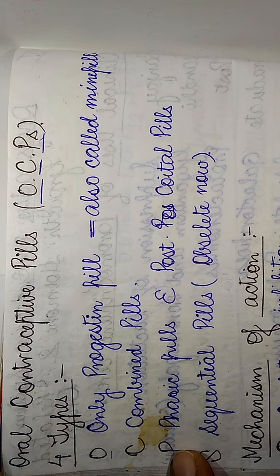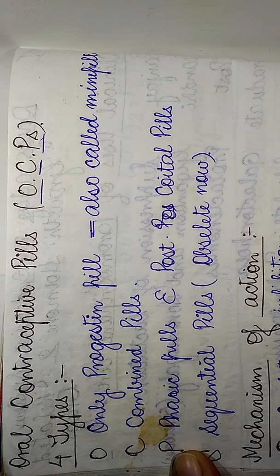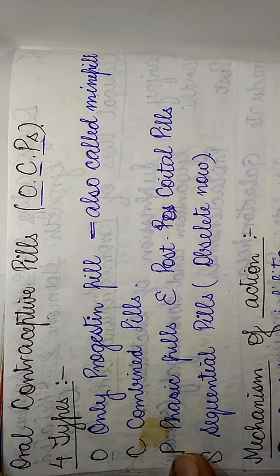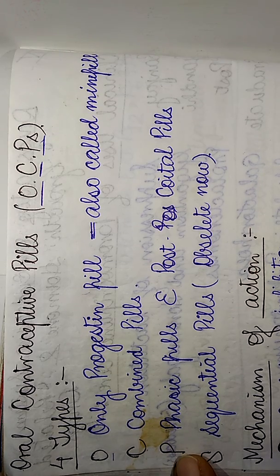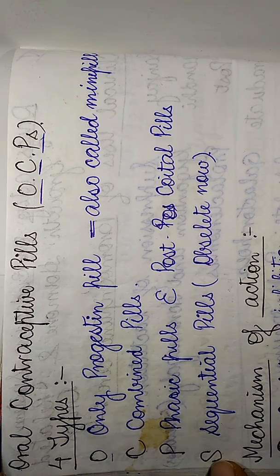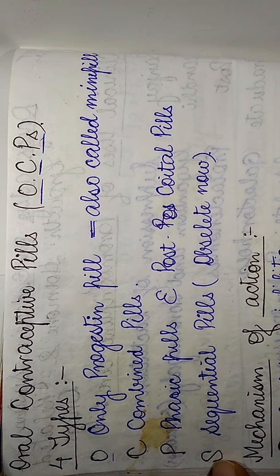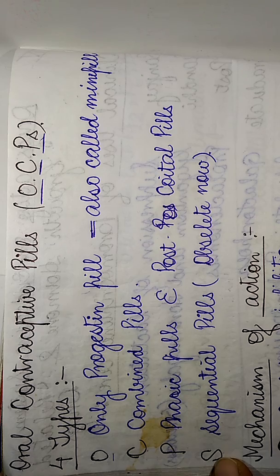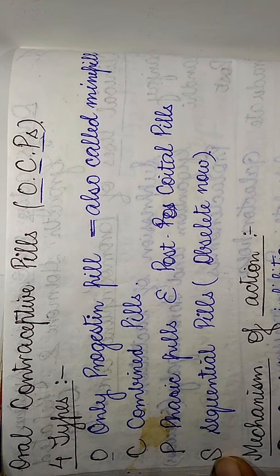The P of the oral contraceptive pills — OCP — stands for the phasic pills and the postcoital pills, whereas the S stands for the sequential pills, which are obsolete now.